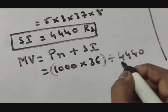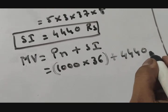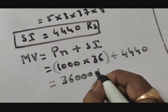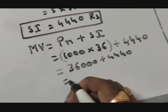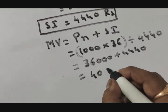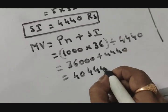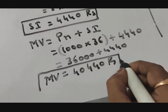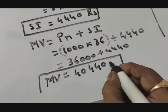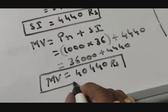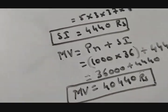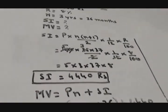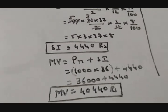How much SI you got? 4440 rupees. If you multiply this, you get 36,000 plus 4440 rupees. If you add, you get 40,440 rupees. This is our maturity value. This is the maturity amount that she is going to receive at the end of 36 months.